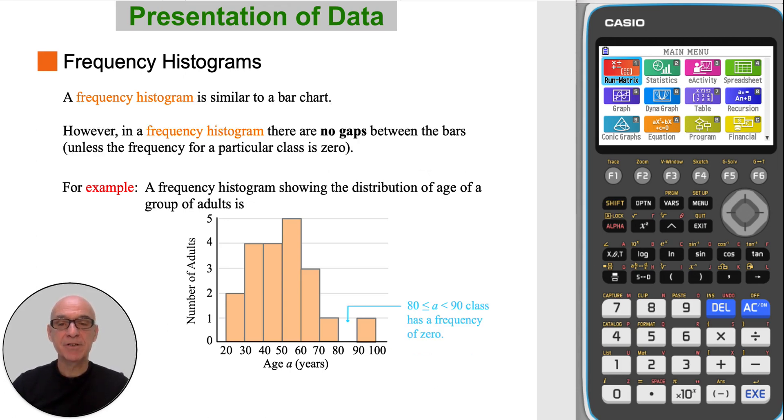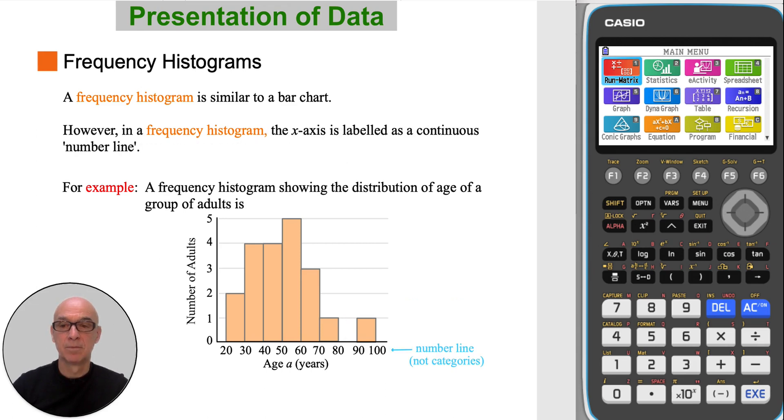A frequency histogram is similar to a bar chart. However, in a frequency histogram, there are no gaps between the bars, unless the frequency for a particular class is zero, as shown in the example. And in a frequency histogram, the x-axis is labelled as a continuous number line.